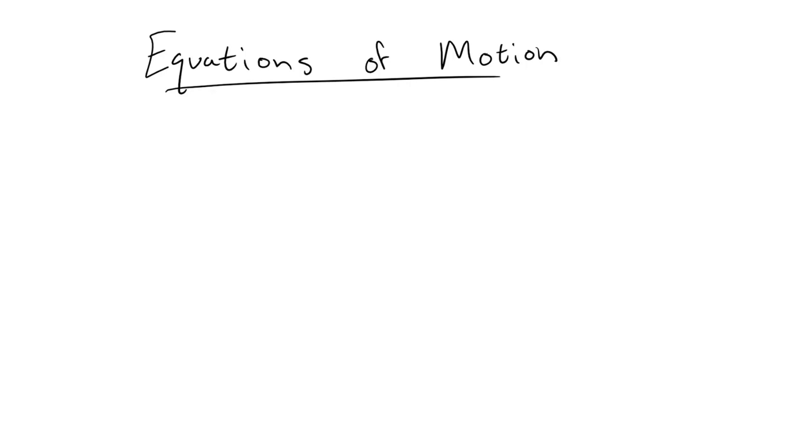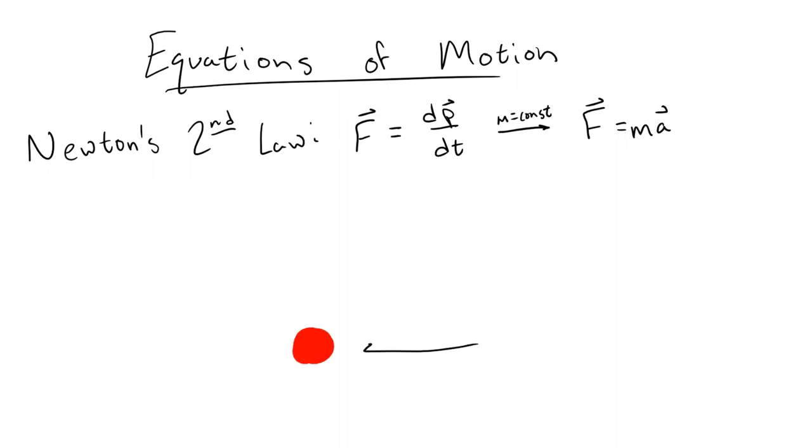The original equations of motion were given by Newton in the form of his second law. If an object has a momentum P and it has a total force F acting on it, then the change of the momentum with respect to time is equal to this force. If the mass of the object doesn't change, then we can find the acceleration of the object by dividing the force by this mass.